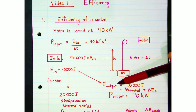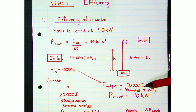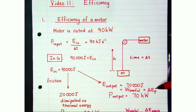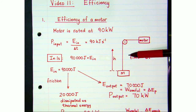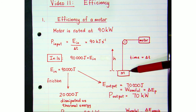The rest would go to useful work done. So the output energy in this one second would be 70,000 joules of useful work done per second, and that would go to changing the mechanical energy of the object — specifically increasing its gravitational potential energy.